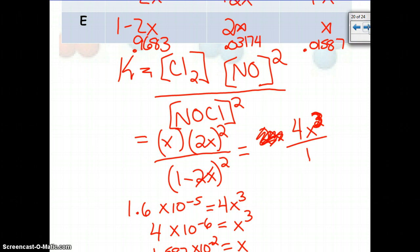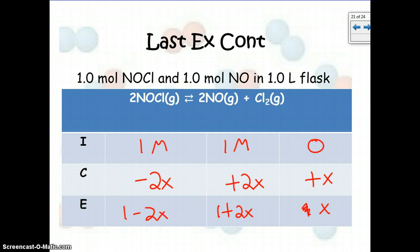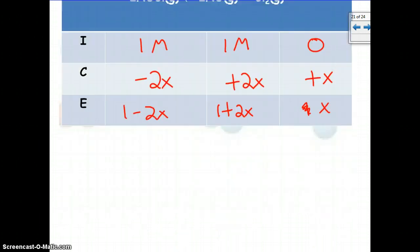All right, now let's look at the next situation. In the next situation, we have 1 mole NOCl and 1 mole NO in a 1 liter flask. So we're starting with 1 molar of this and 1 molar of this and 0 of this. So we are going to have to make some more products because we have no Cl, so this is going to be minus 2x, it's going to be plus 2x, and this is going to be plus x. So our equilibriums will be 1 plus 2x there, just x there, and then 1 minus 2x there. Again, we will set up our equilibrium.